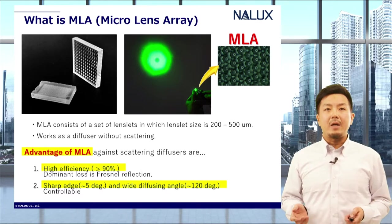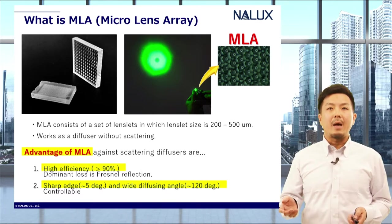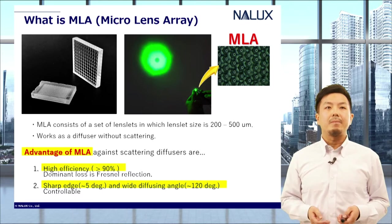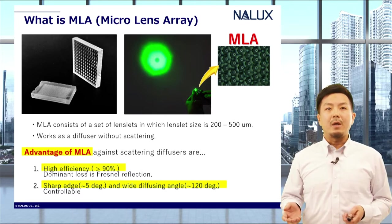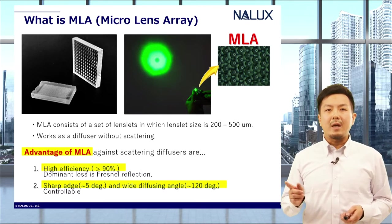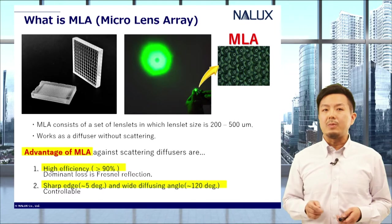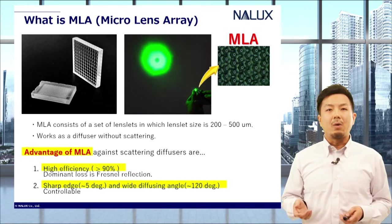MLA is an abbreviation of micro lens array, which consists of a set of lenslets in which lens size is 200 to 500 microns, and it works as a diffuser without scattering. This without-scattering property is one of the advantages of MLA diffuser, because only Fresnel loss will be the dominant loss of transmittance, and we can reduce the loss by applying AR coat if necessary.